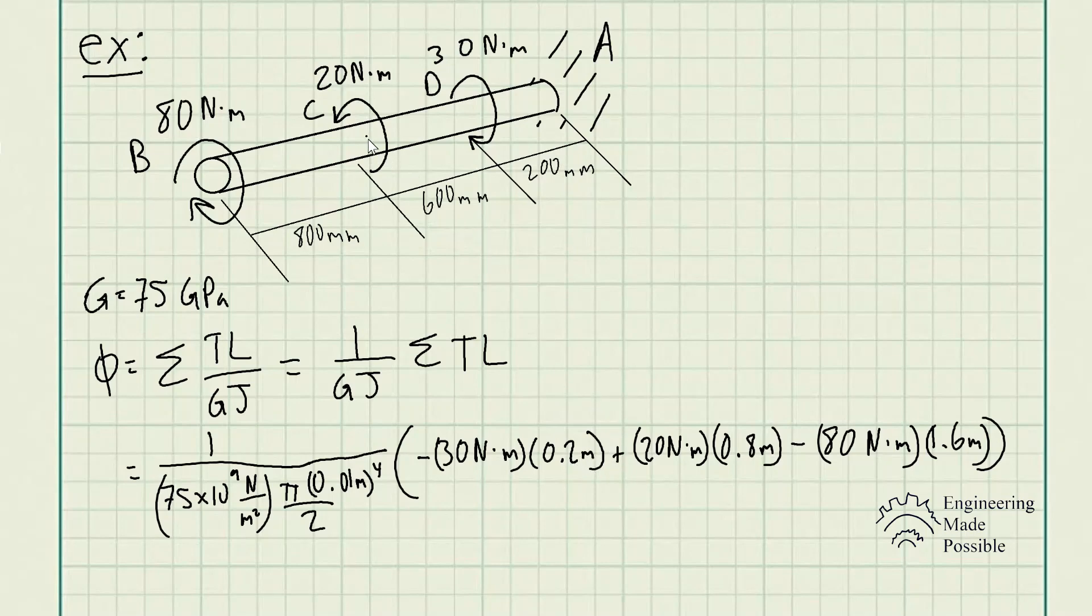And then at C, we have a torque going counterclockwise, which is positive sign convention. So it's 20 Nm times 0.8 meters. In this case, remember the angle of twist would depend from the starting point to where that torque is being applied. So it's 600 plus 200, which is 800 millimeters or 0.8 meters.